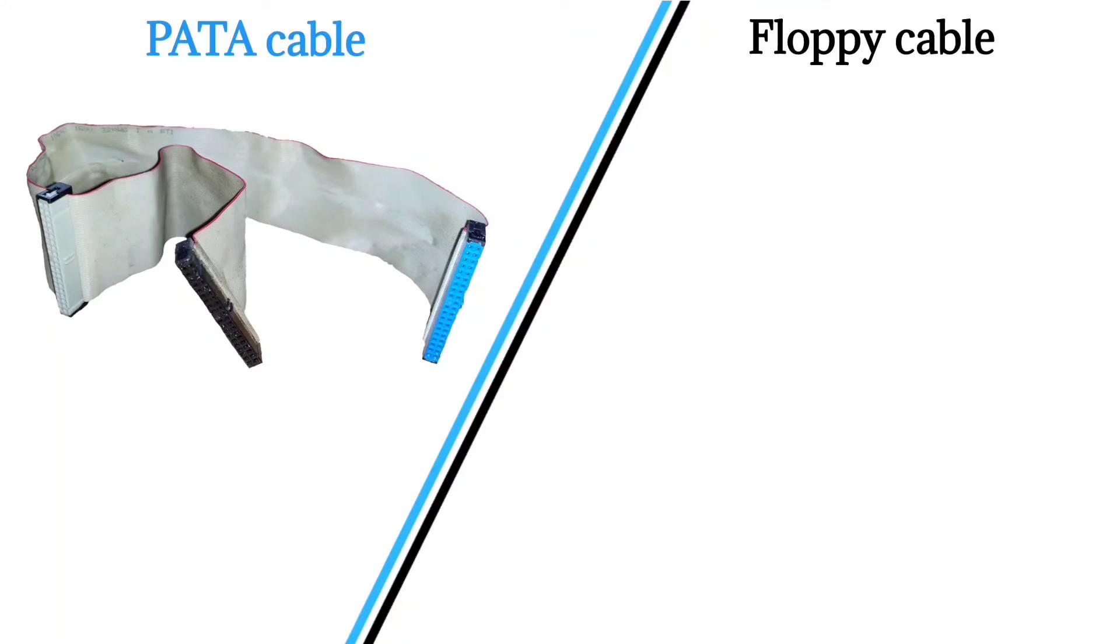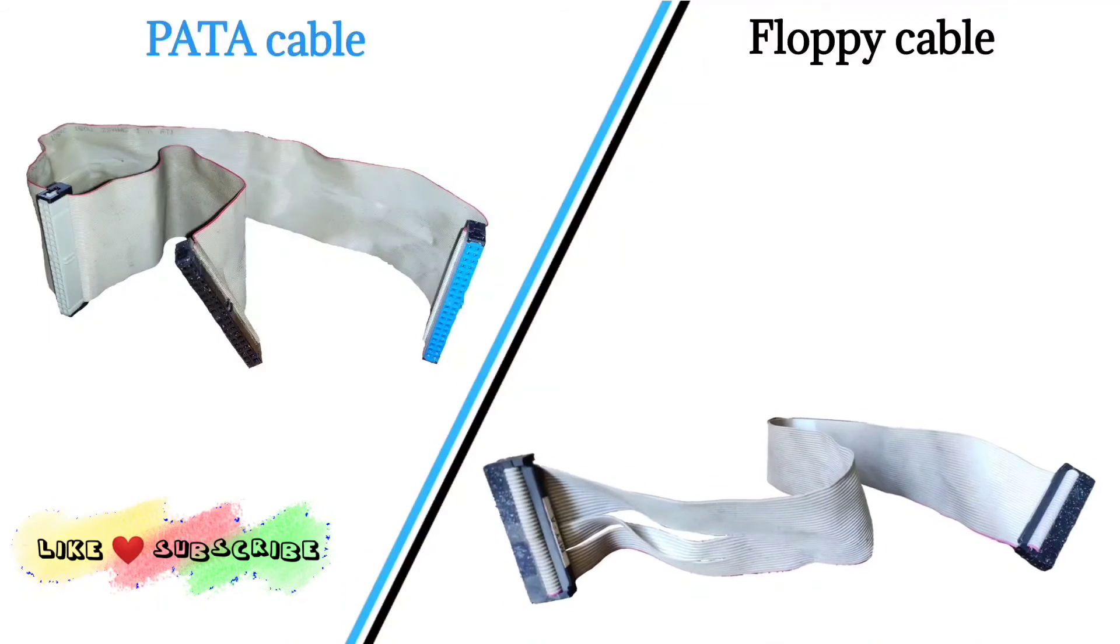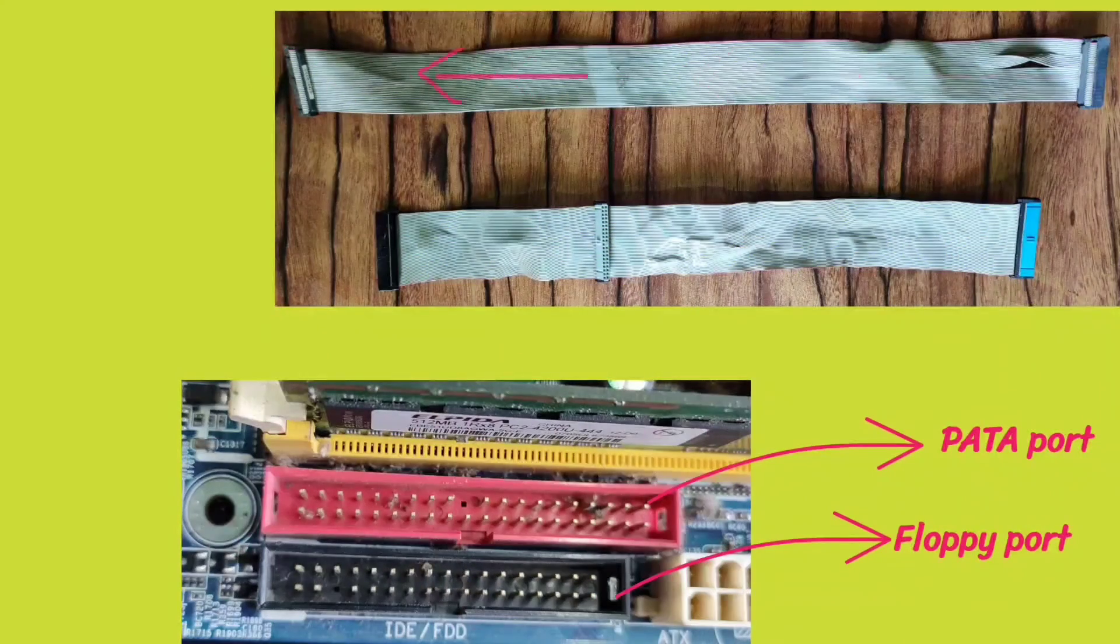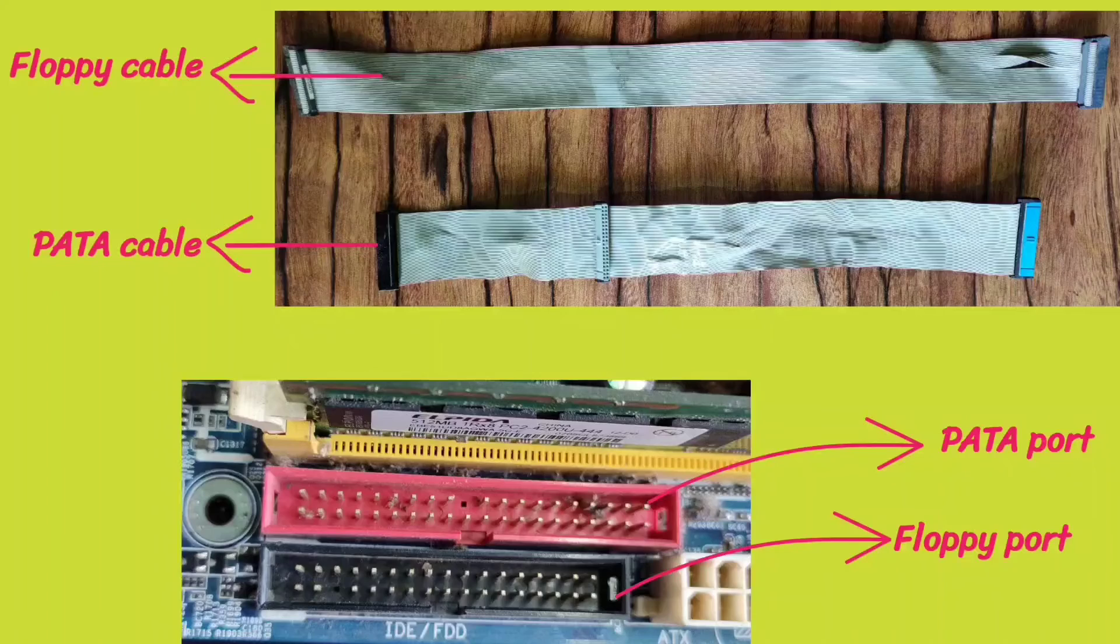PATA connectors and ports are bigger than floppy cable, but the PATA cable is shorter than floppy cable. It's just 18 inches long.